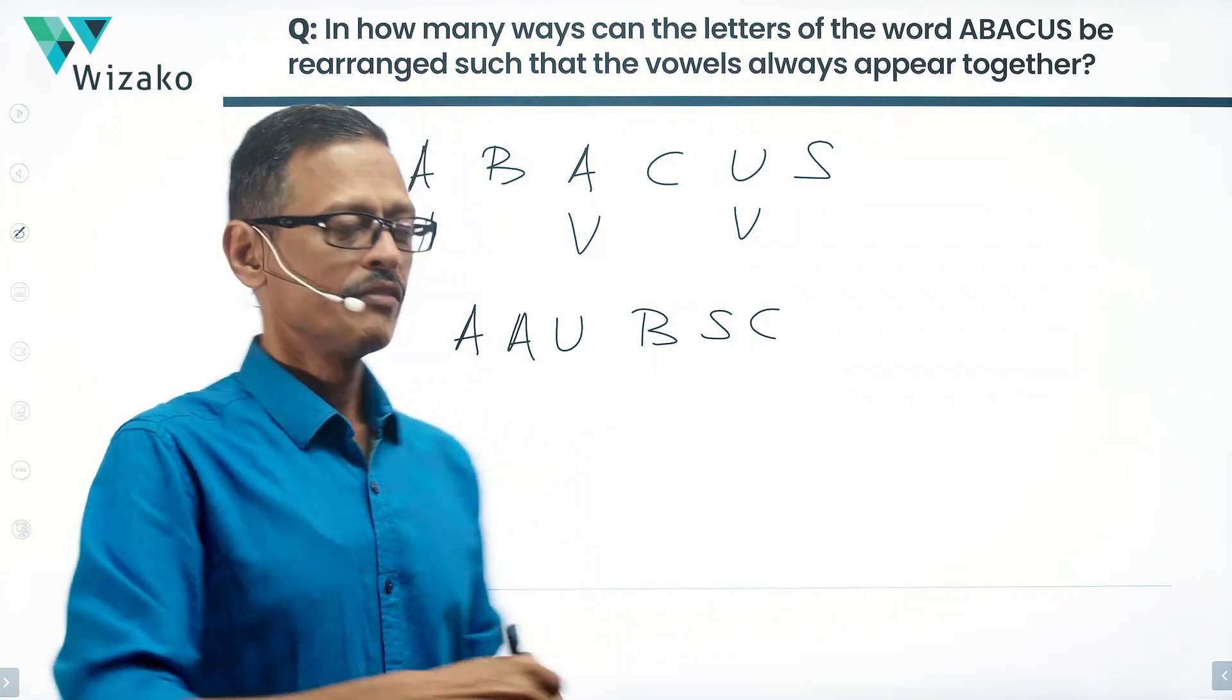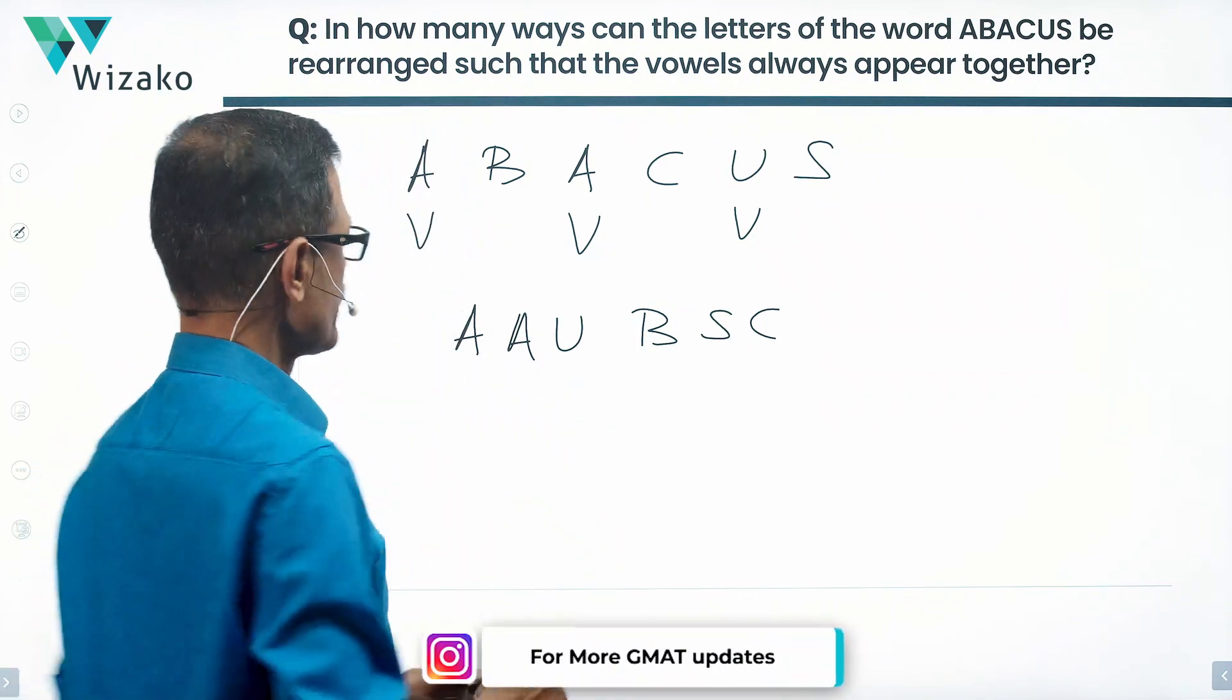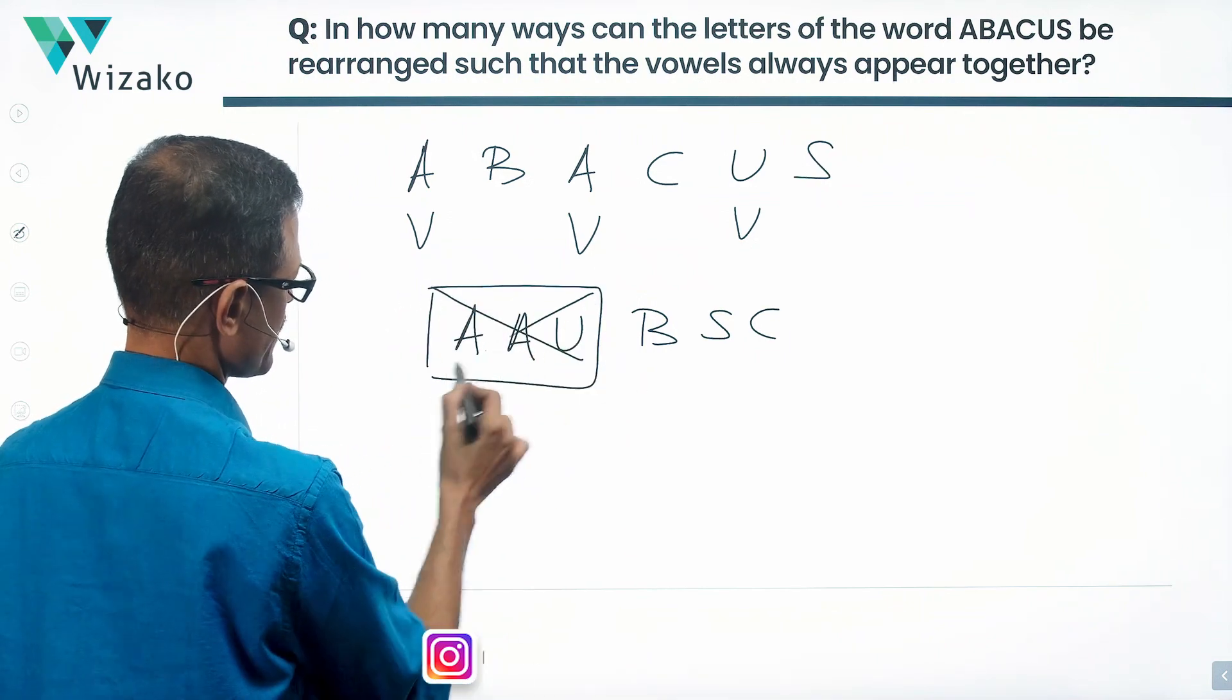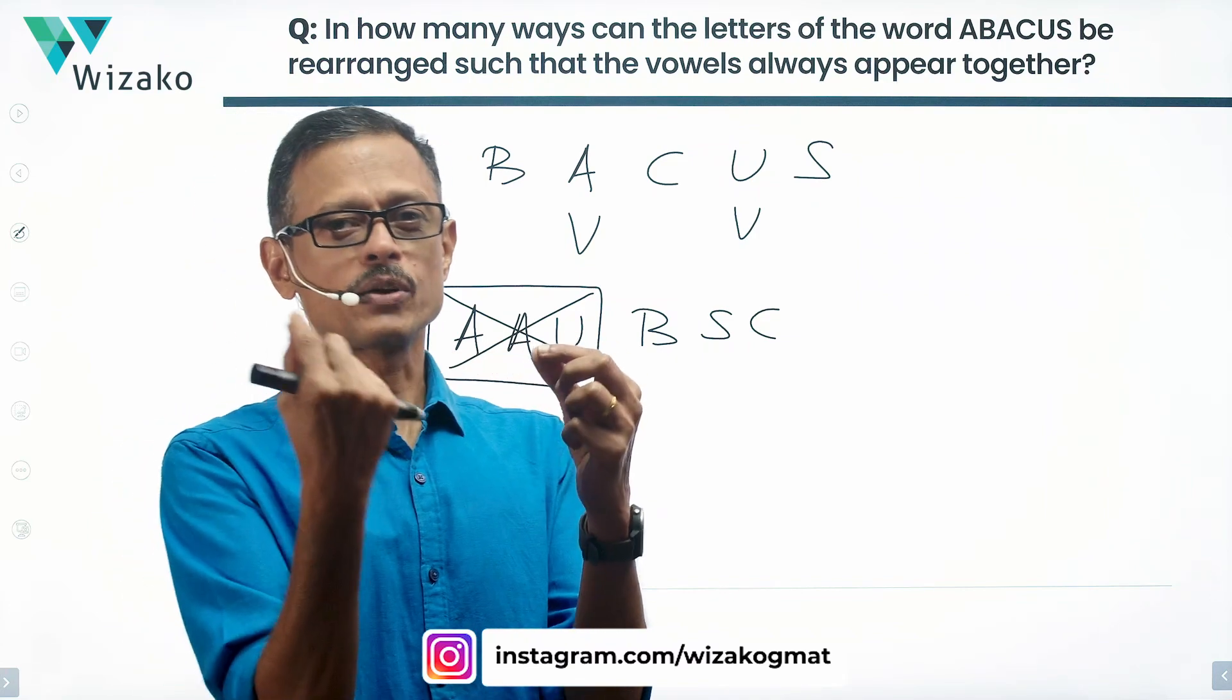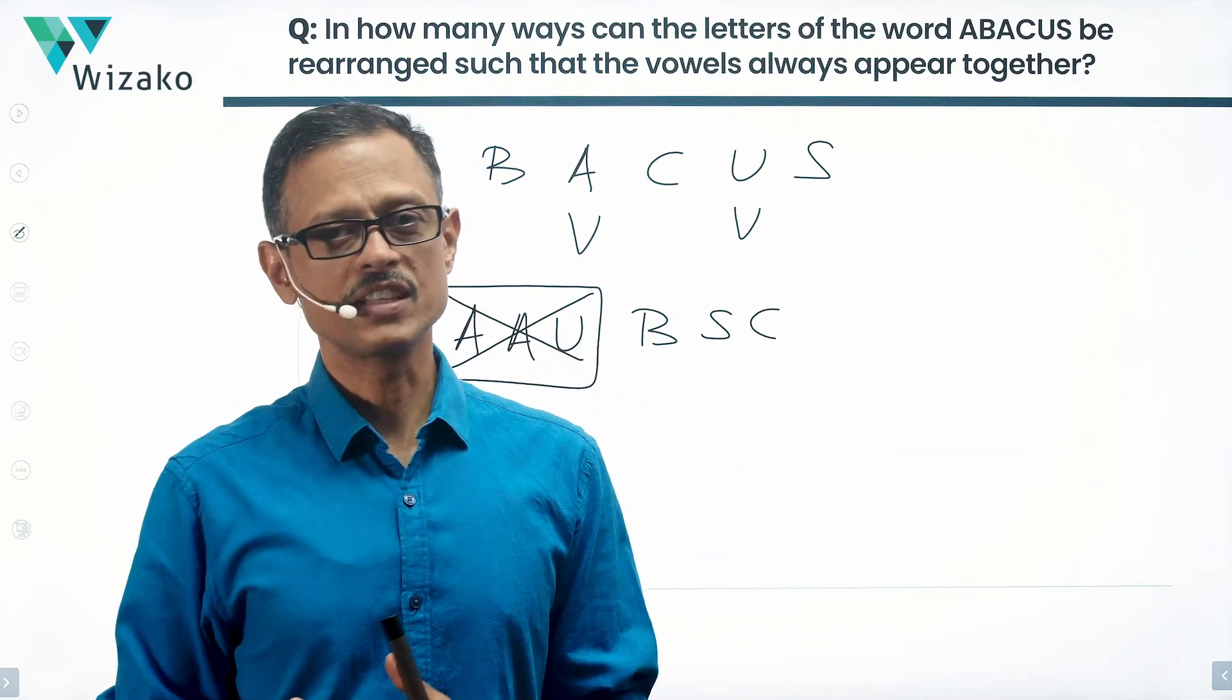How do we go about doing this? We want the vowels to appear together, so we'll make sure that the vowels appear together. We'll box them as one unit and call this unit X. So the A, A, U - it's like we put a cellotape around it and we're moving it together so they cannot be separated by any other letters in between them.